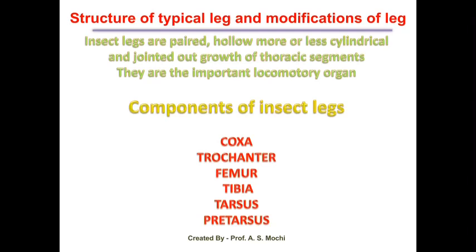Today we are going to learn about the different leg modifications in insects — the different types of legs found in insects. Insects have three pairs of legs: the first pair, the middle pair of legs, and the hind pair of legs.